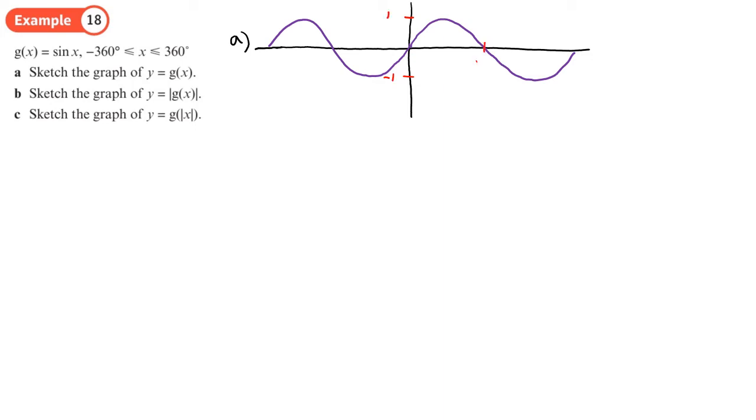So we've got that. I suppose we want to put on important points there. So we're in degrees: 180, 360, minus 180, minus 360. So always put the points where the graph crosses the axis.